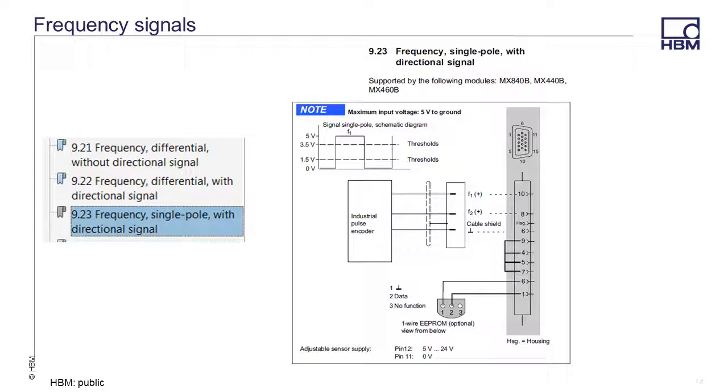The third wiring configuration is for a single pole frequency signal with directional signal. This is a common output for industrial pulse encoders.